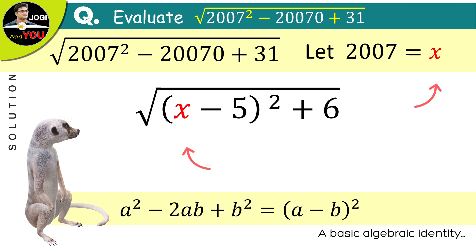Now look at these x's. Here, we assume 2007 to be x. So, instead of x, apply again 2007.